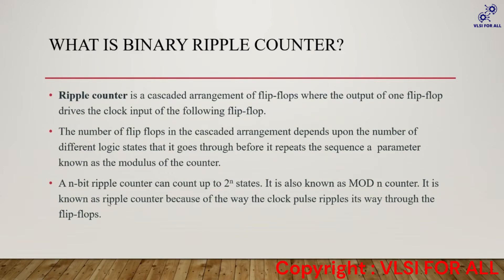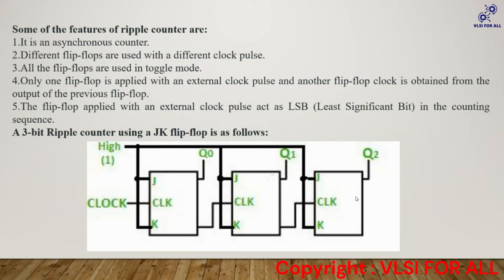It is known as a ripple counter because the clock pulses ripple their way through the flip-flops. Here are some features of the ripple counter. First, it is an asynchronous counter — when the same clock is given to all flip-flops it acts as a synchronous counter, but here the clock is given only to the first flip-flop and the remaining flip-flops are driven through the outputs of the previous flip-flops. Different flip-flops are used with different clock pulses.